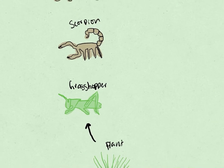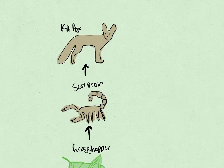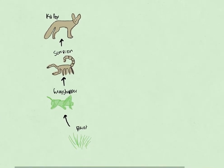Next, the grasshopper is eaten by the scorpion. So we draw another line there. And lastly, the scorpion is eaten by the kit fox.